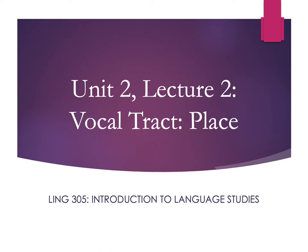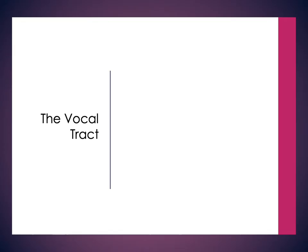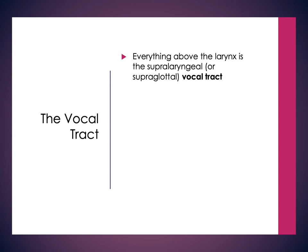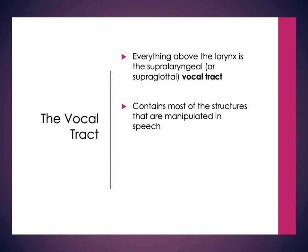Hi everyone and welcome back. This next lecture is going to continue talking about the vocal tract and we're going to move into the second major feature of consonant sounds of language, which is place. Everything that's above the larynx, above the vocal folds, is known as the supralaryngeal or supraglottal vocal tract — typically just referred to as the vocal tract. This contains most of what we use when we're making different speech sounds, including all of the areas in our oral tract and nasal cavity.